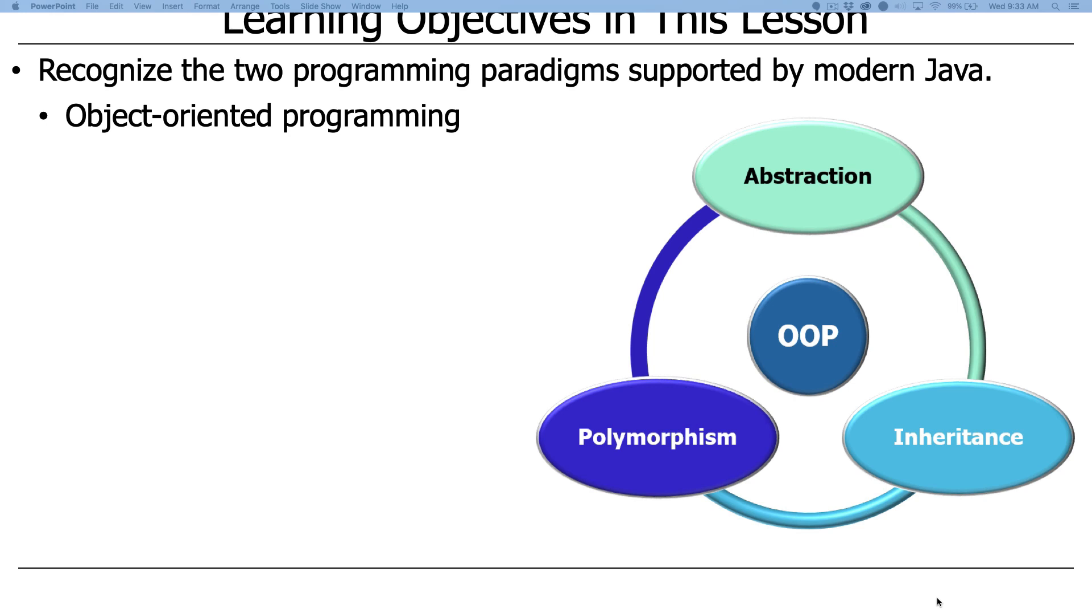Now, the object-oriented parts of Java, which is almost certainly what you know, I certainly hope you know this stuff, include three primary capabilities. These capabilities are abstraction, inheritance, and polymorphism. I will briefly talk about them. I suspect you probably know what this means, even if you're not always familiar with all the funny words.